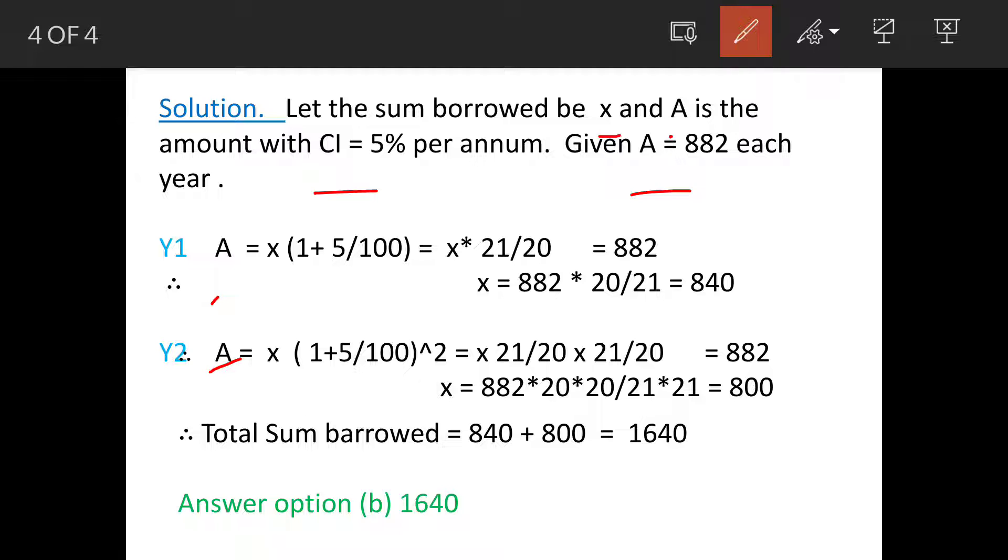So for the first year, A equals x, the amount borrowed, times the rate of interest. The formula for compound interest is: amount A equals x times (1 + r/100) to the power t. For the first year, t is 1.